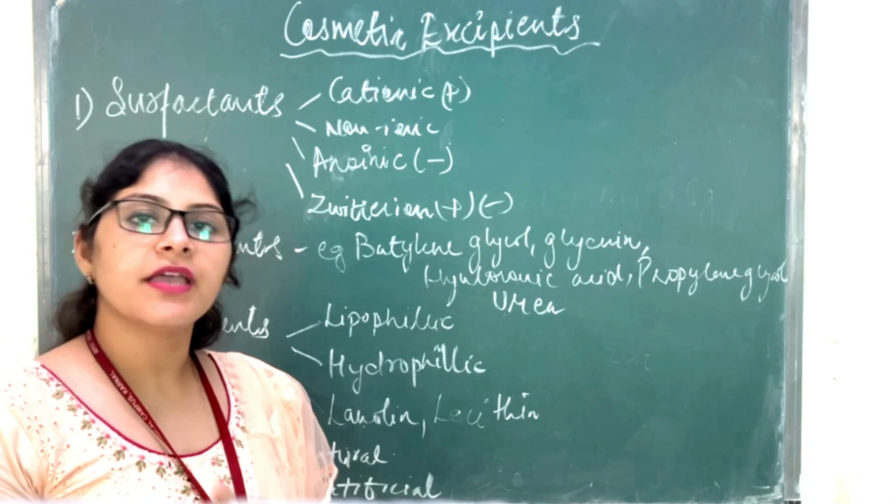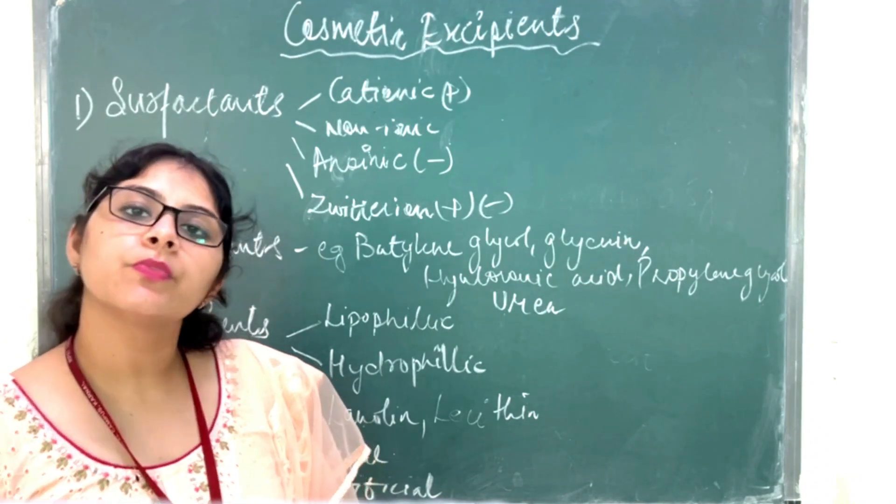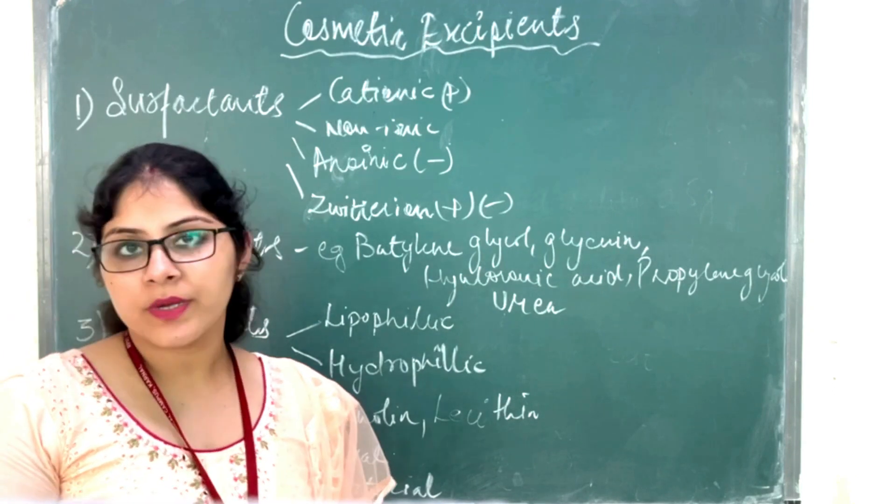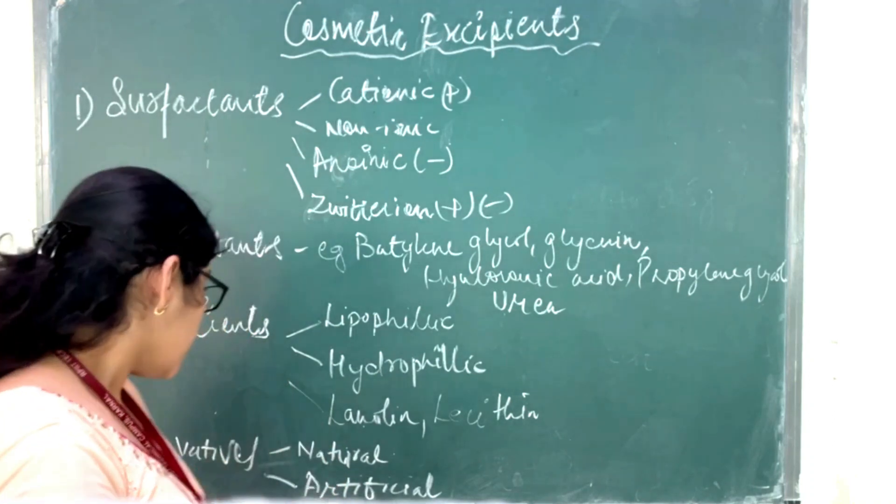Some have antimicrobial activity as preservatives, like parabens, methylparaben and propylparaben, which is most commonly used in any preparations. Methylparaben and propylparaben are common preservatives.